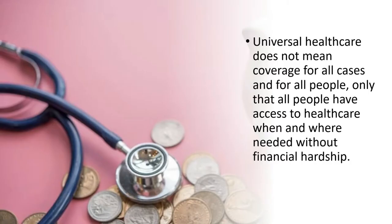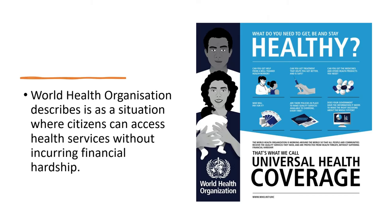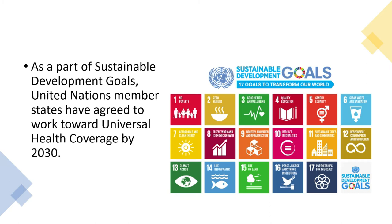Universal health care does not mean coverage of all cases for all people — it means all people have access to health care when needed without financial hardship. The WHO describes it as a situation where citizens can access health services without incurring financial hardship. As part of the Sustainable Development Goals, UN member states have agreed to work towards universal health coverage by 2030 — specifically SDG Goal 3, which is about good health and well-being.